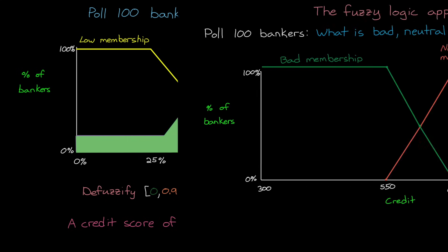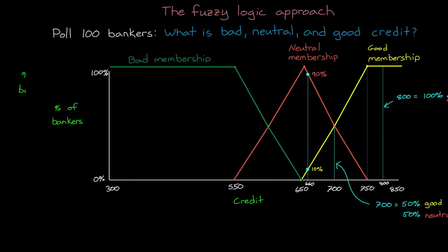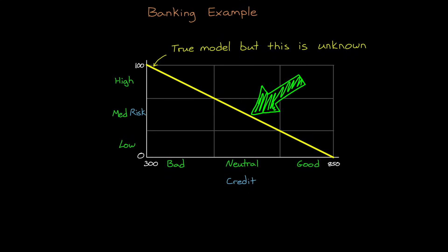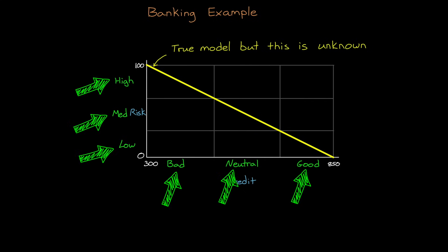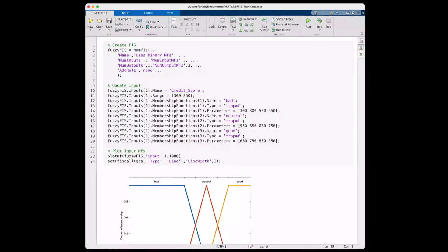This means that a credit score of 660 is 46% risky. This lines up pretty nicely with our expectations that 660 is a little bit higher than what most bankers consider neutral credit, and so it is a little bit less risky than 50%. So fuzzy inference is a way of doing interpolation using vague language. We were able to approximate this true function with the interpolation of these vague terms. The key to all of this is that baked into these terms is actual knowledge from the experience of experts. Now I'll show you what the full interpolation looks like over in MATLAB.